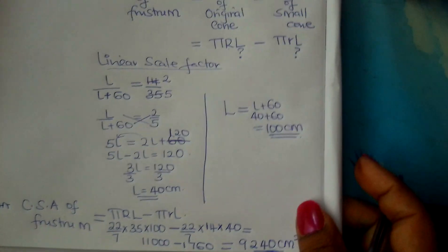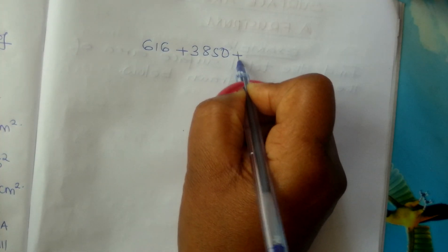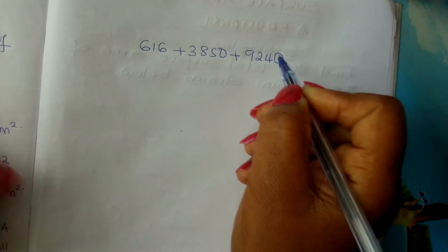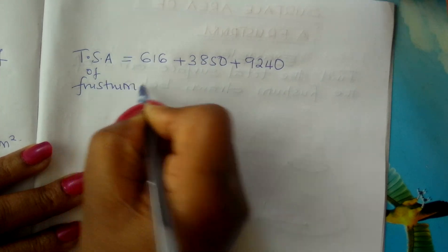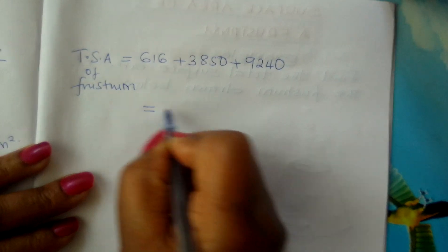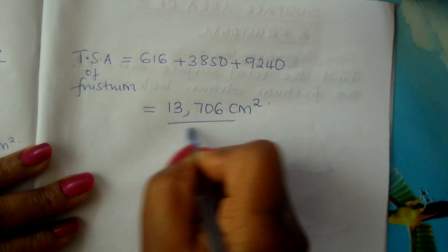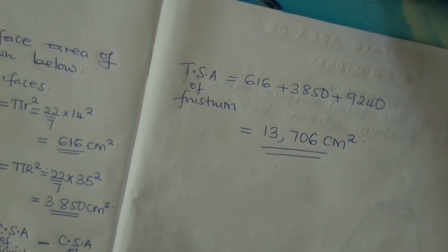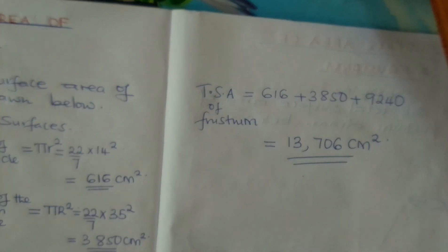Now we add up all three areas to get the total surface area. The area of the top circle was 616, the area of the bottom circle was 3850, and the area of the curved surface is 9240. Adding these three together gives a total surface area of 13,706 centimeters squared. Go and practice finding the total surface area of a frustum — I wish you all the best!